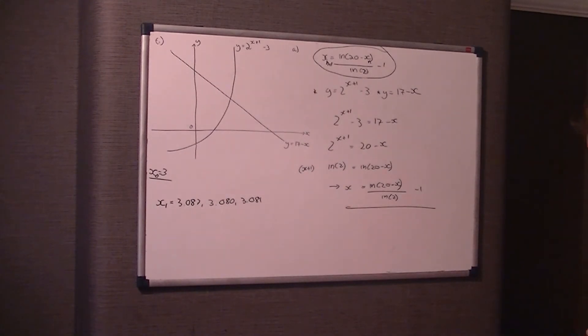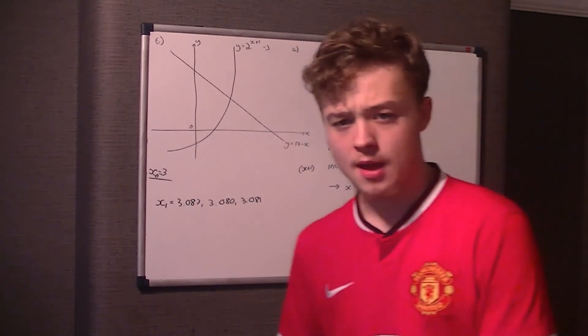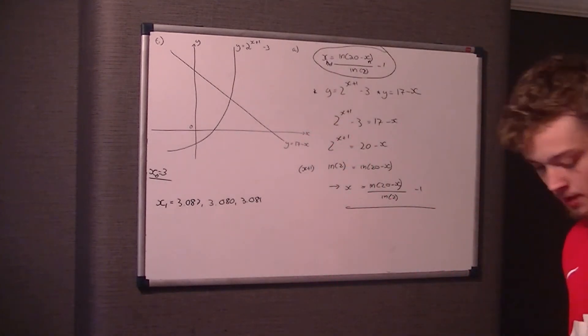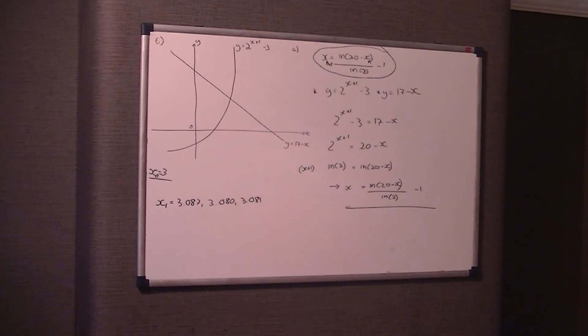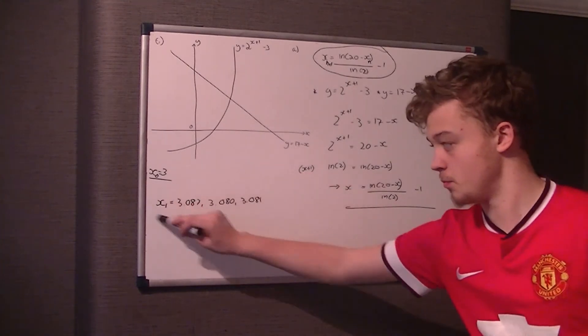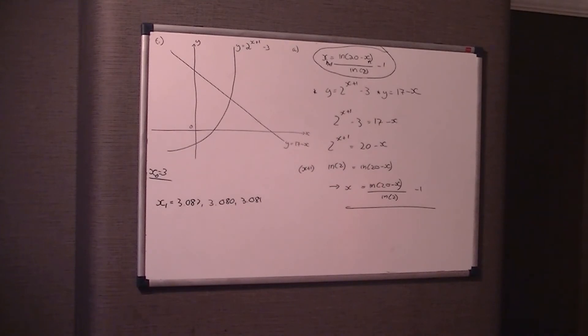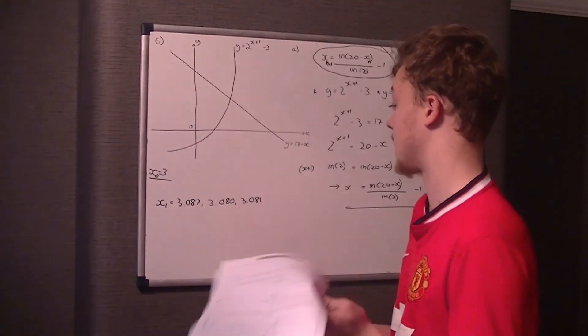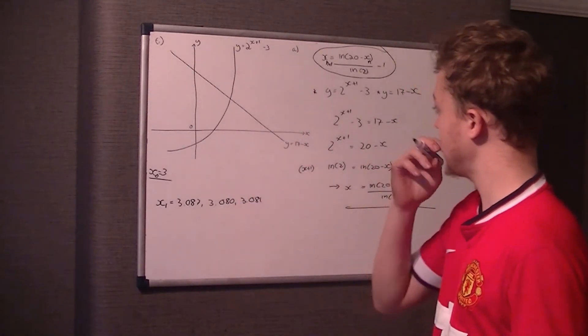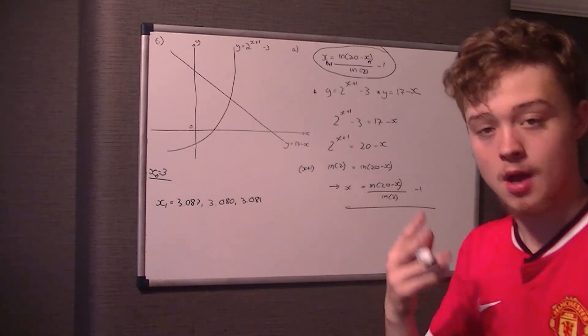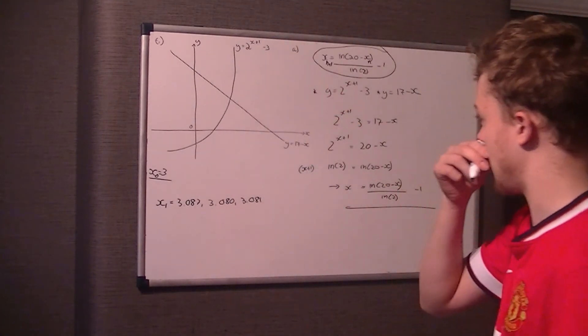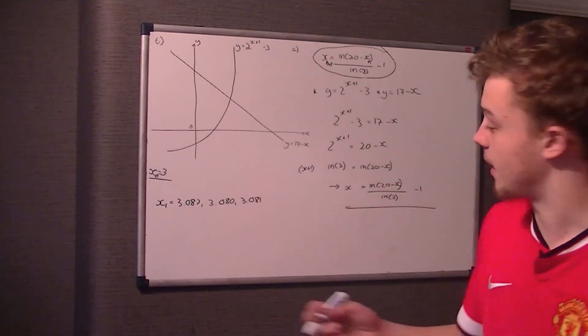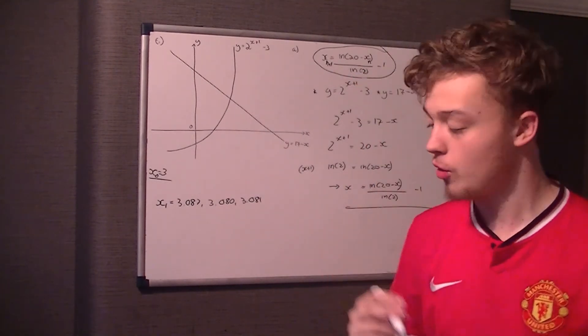Now, this part C, the actual question says using your answer to part B, which is a bit of a hint that we've been doing some conversions, deduce the coordinates of point A, giving your answer to one decimal place. So we've got to somehow find this point A. Now point A, by the way, is where they intersect. What we've done here is rearrange to get x, because y equals y. So the y points at this point are the same. We just want to know what x is. So this is an iteration for the x formula.